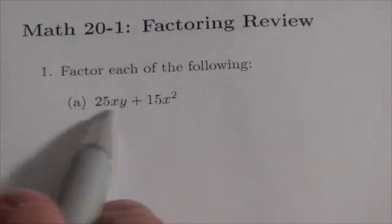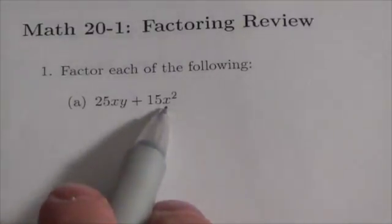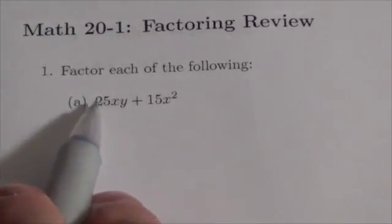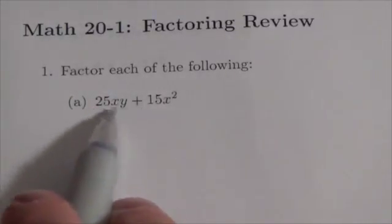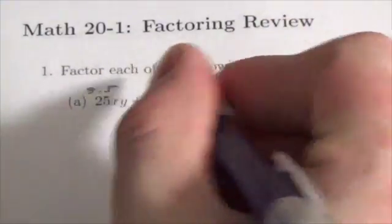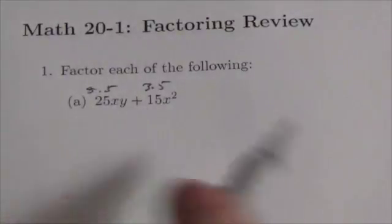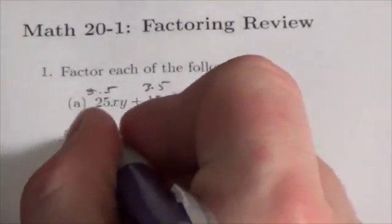Okay, now a common factor. So take a look at the numerical coefficients 25 and 15. Well, 25 is 5 by 5, 15 is 3 by 5. I can see a common factor of 5, so I'm gonna take a 5 and write it out here.